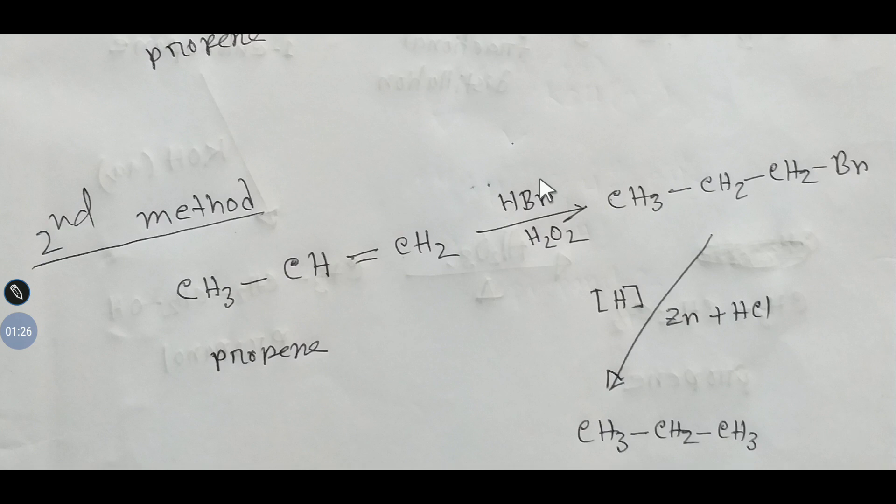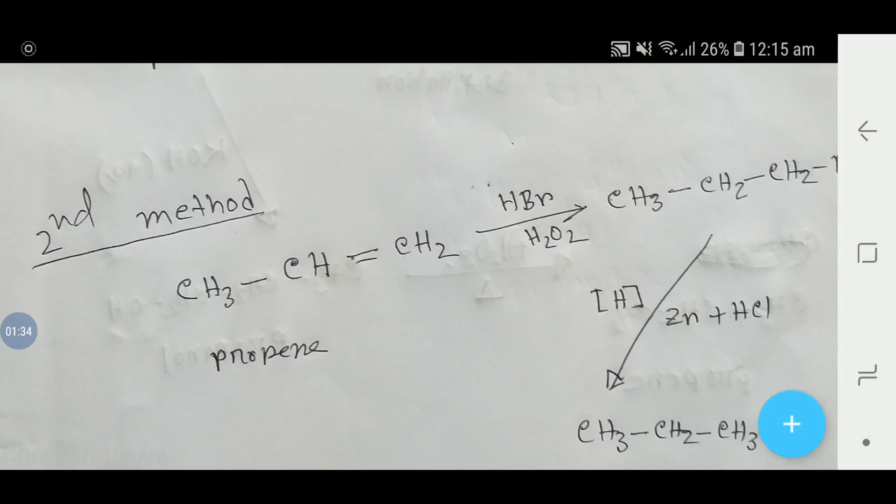That is, the negative part, the bromide ion, will come to this carbon. This hydrogen is plus and this is minus. This bromide ion will come to this carbon because this carbon has maximum number of hydrogen.